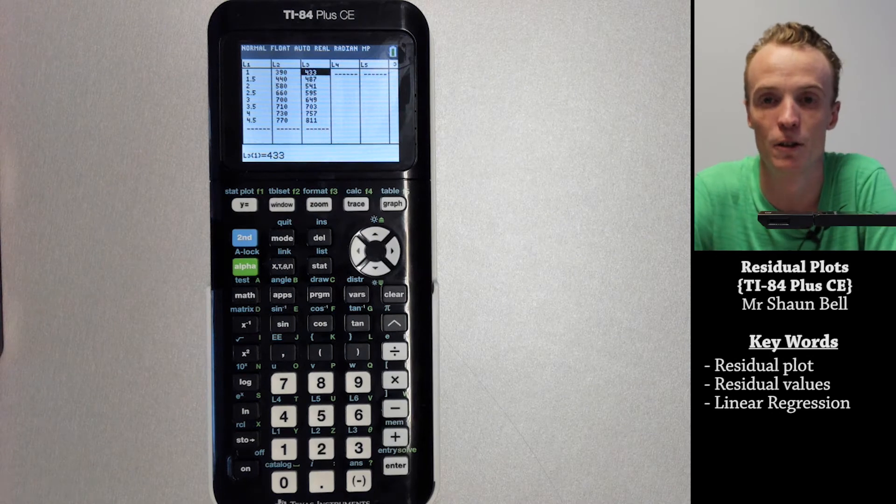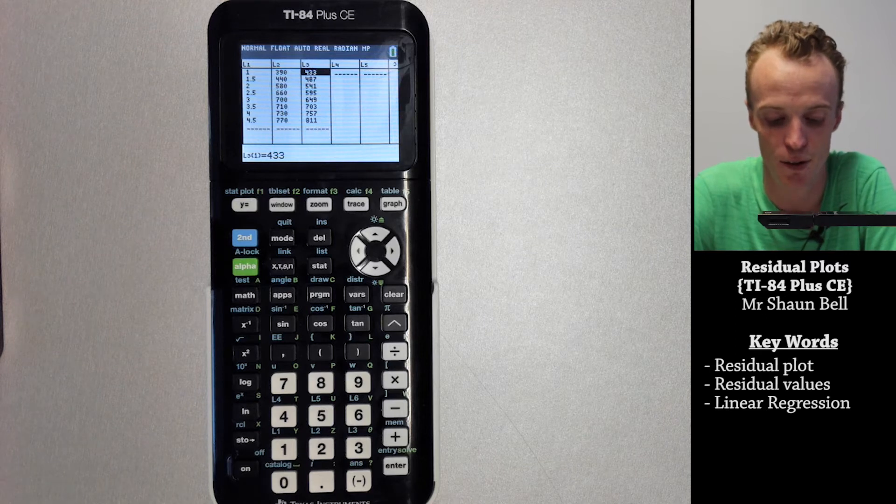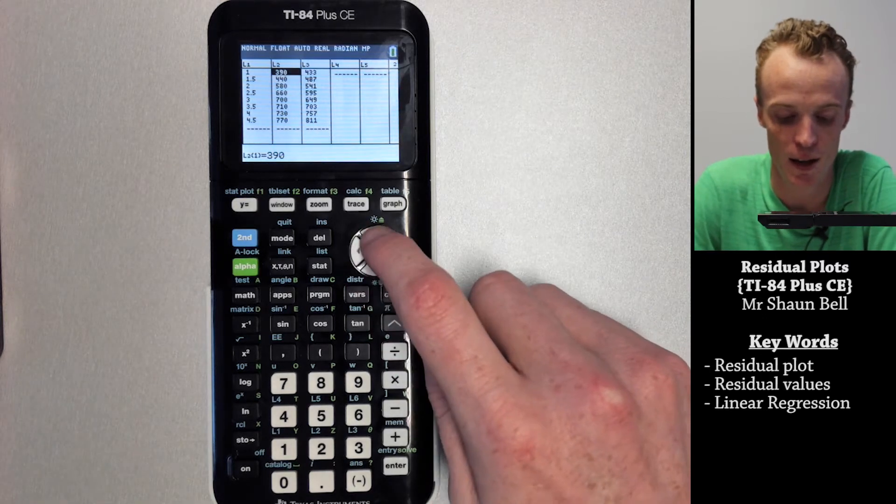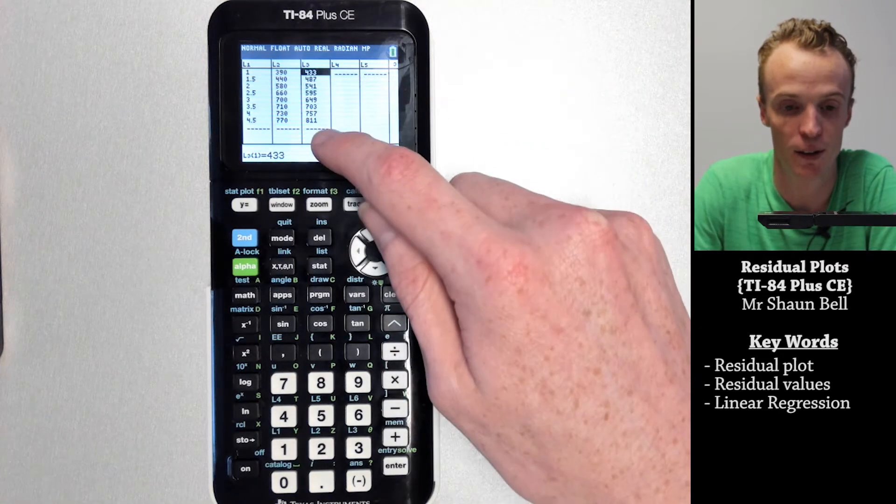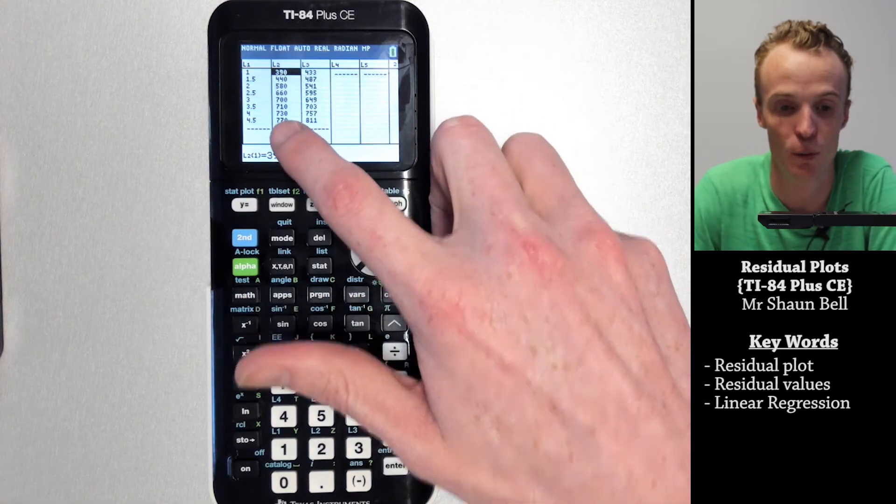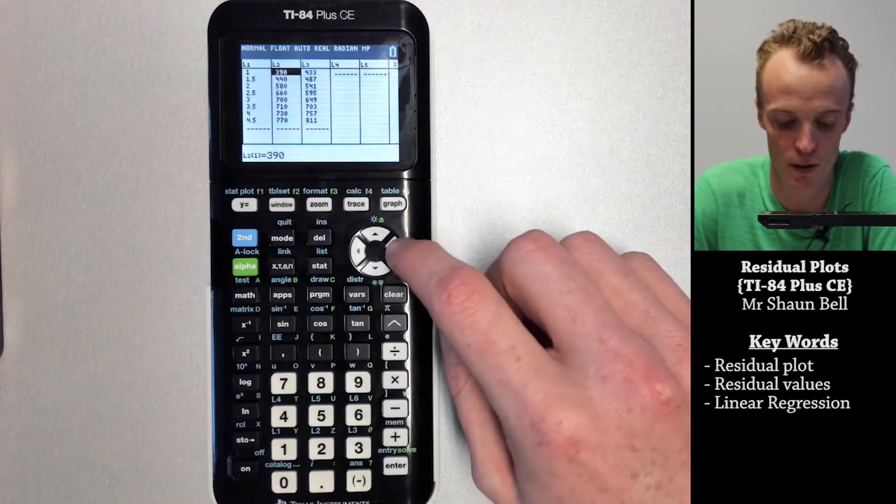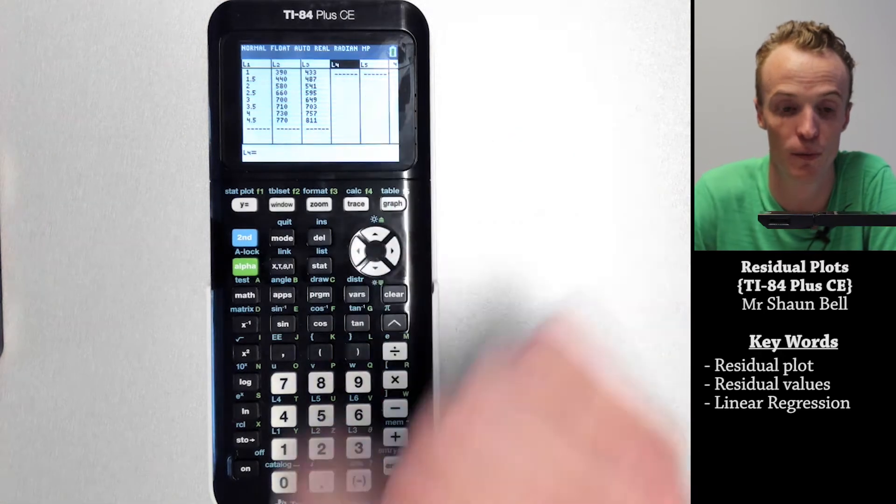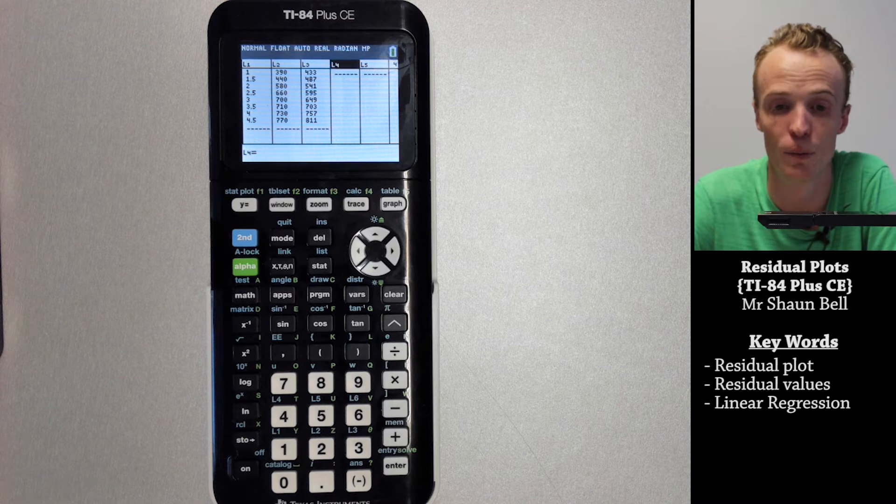So now I need to create my residual values and I'm going to do that in list four. To create these values I need to take the predicted value that I've just done in list three away from the list two value which was the observed value. To do that I move my cursor so it's highlighting the top of list four and I want to put in list two subtract list three.